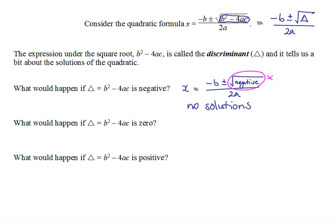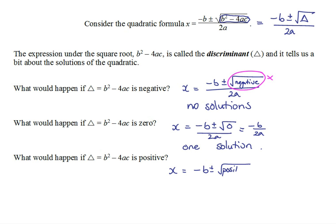If the discriminant is zero, we're going to have x equals negative b plus or minus the square root of zero, all over 2a. The square root of zero is zero, so we just get negative b over 2a — just one solution. And if the discriminant is positive, we have x equals negative b plus or minus the square root of something positive, all over 2a. When you square root something positive you get a positive or negative result, so that gives us two solutions: negative b plus the square root of the discriminant over 2a, and negative b minus the square root of the discriminant over 2a.